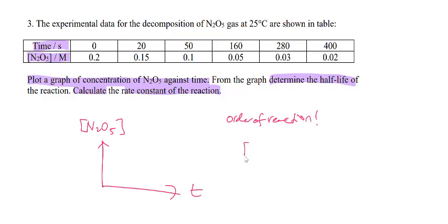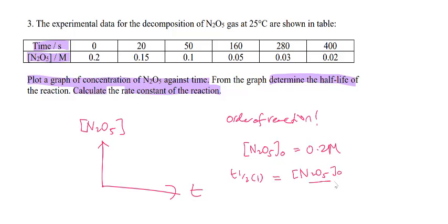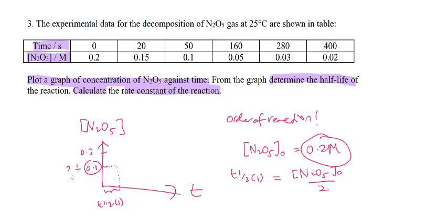When the initial concentration of N₂O₅ is given as 0.2 molar, this is our initial concentration. To find the first half-life from the graph, divide [N₂O₅]₀ by 2 — so 0.2 molar divided by 2 gives 0.1 molar. Draw across from that value to the curve, then down to the time axis to get the first T-half. To find the second T-half, divide 0.1 molar by 2 again, and repeat the same process to get the second half-life value.